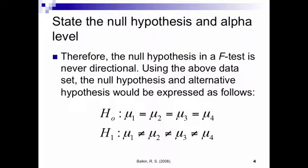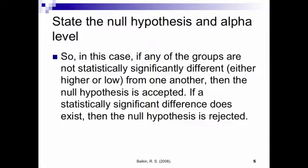When we do an ANOVA, we always want to identify the null hypothesis. The null hypothesis says we don't expect any differences — group one equals group two equals group three equals group four. The alternative hypothesis is the opposite: the groups will not all be equal. Generally with F-tests or ANOVA, we don't do directional hypotheses, so it's just equal or not equal. A statistically significant difference would mean that at least one of the groups is different from the others — maybe two or three groups vary from each other.